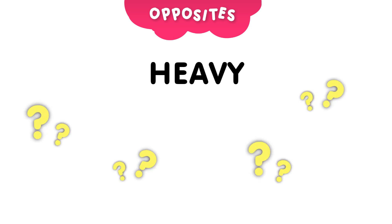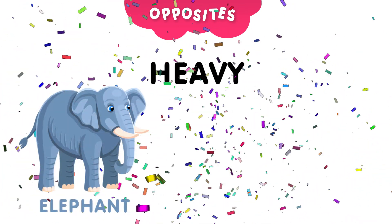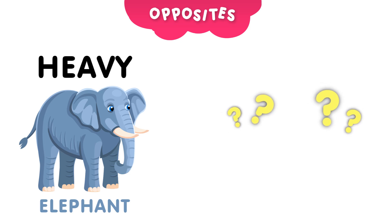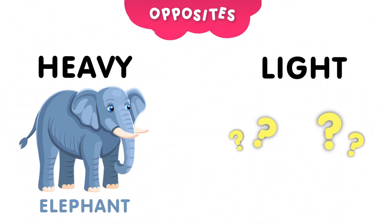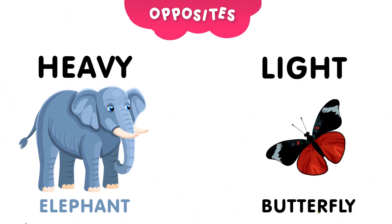Next, we have the word heavy. Can you guess which animal is heavy? And the answer is, the elephant. Elephants are very heavy. Now, can you guess the opposite of heavy? Take 5 seconds to think about it. And the answer is, light. Can you guess which animal is light? And the answer is, the butterfly. Butterflies are light.